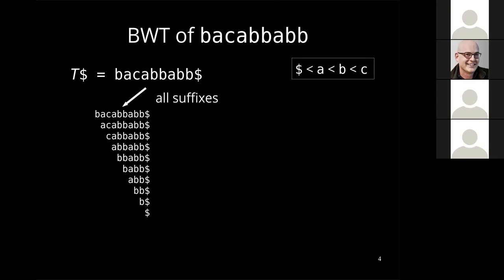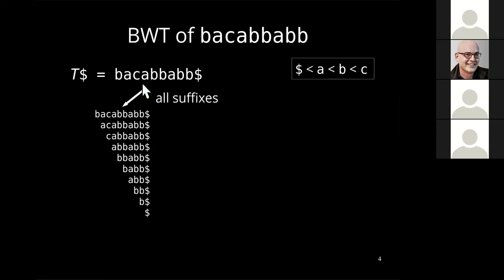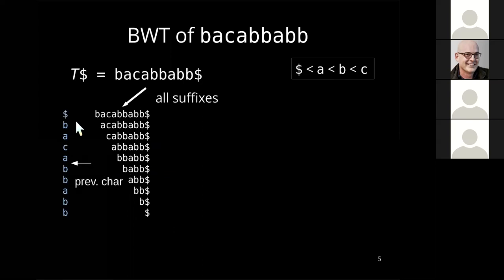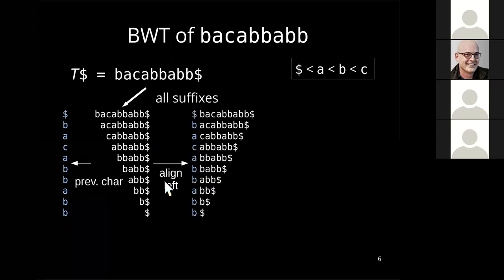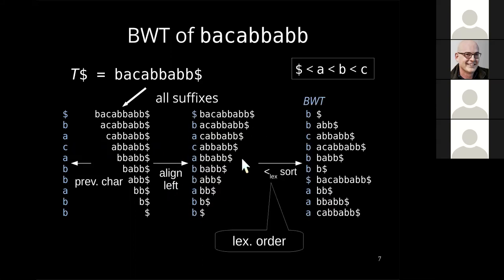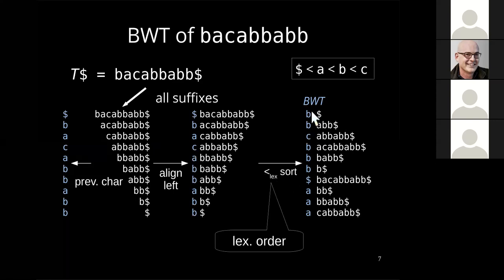Given our text, we append the dollar sign, which is smaller than all other characters and is unique. We take all suffixes, take the preceding character of each suffix, sort the suffixes lexicographically, and during the sorting we take along these blue characters. Reading from top to bottom gives us the BWT.